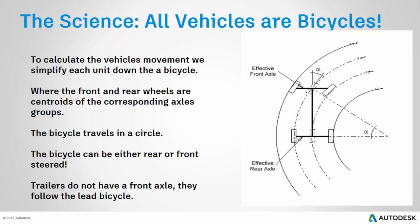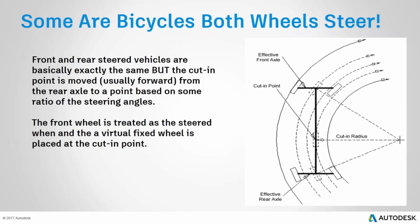It's quite common now, especially with large construction vehicles, to have vehicles with both rear and front steering. They model exactly the same as bicycles — you create a virtual third axle and forget about the rear axle. The location of that virtual fixed axle is based on a ratio of the wheel angles. Once you've worked out where the virtual middle axle is, it behaves exactly the same as a normal bicycle with front steering.